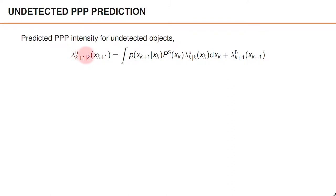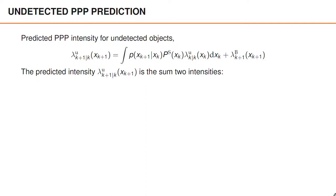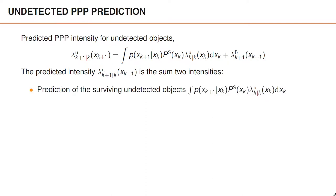The predicted Poisson point process intensity for the undetected objects is given by the integral of the transition density, the probability of survival, and the posterior intensity, plus the birth intensity. The predicted intensity is the sum of two intensities: the first is the prediction of the surviving undetected objects — the intensity for the undetected objects that survive to the next time step — and the second part is the birth intensity, representing undetected objects that possibly appeared in the surveillance area at this time.